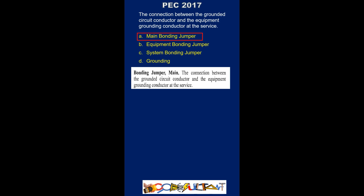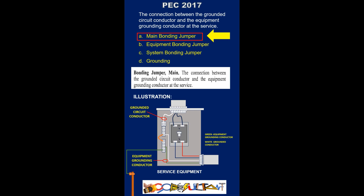Based on the code definition in Article 1, the main bonding jumper is the connection between the grounded circuit conductor and the equipment grounding conductor at the service. Therefore, the answer is letter A. The bonding jumper that links the equipment ground bus and the neutral bus serves as an example of a main bonding jumper, as shown in the illustration.